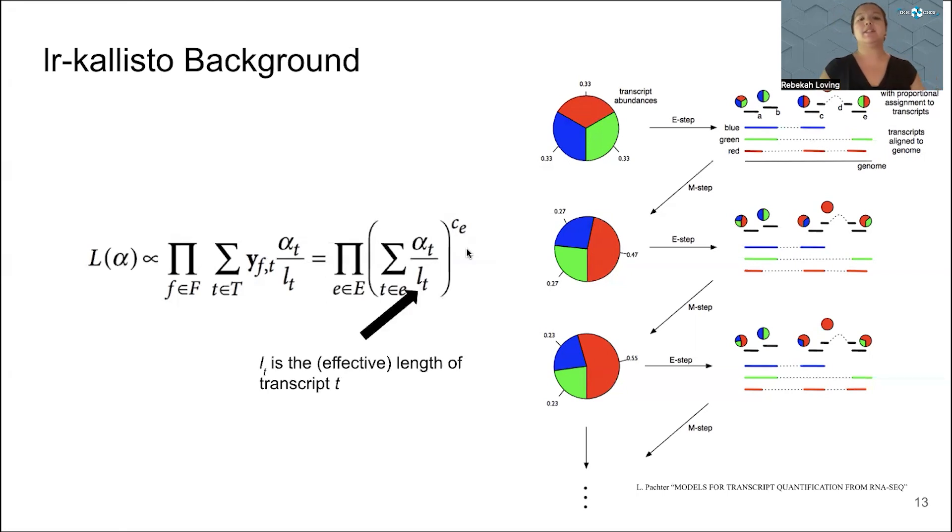The effective length is actually different in LR Kallisto than in Kallisto. In Kallisto, you assume a Gaussian distribution of the lengths of the fragments because you're not getting the full length molecules. Whereas in LR Kallisto, you actually are getting the full length molecules, so we do not assume a Gaussian and instead we estimate the mean length for each transcript. On the right hand side here, we have an example of the expectation maximization where we start with a uniform distribution over the transcript abundances, use the expectation to look at what we're seeing in the data, and then we maximize based on the likelihood of the different transcript abundances. We repeat this until we have convergence.